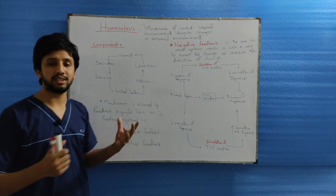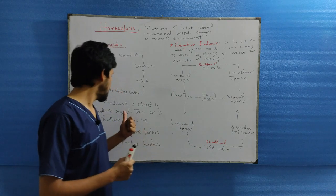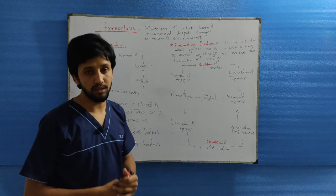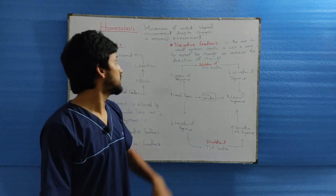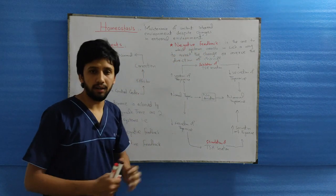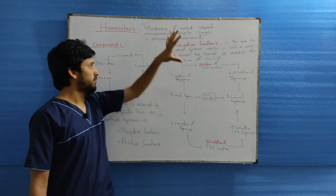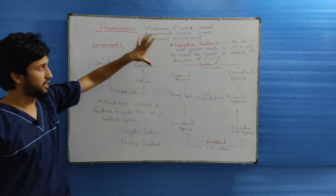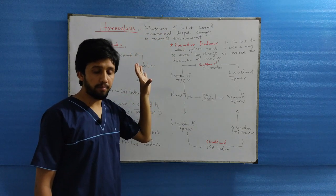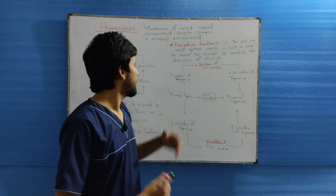This maintenance is achieved by feedback signals. What are the two basic signals involved? That is, negative feedback signals and positive feedback signals. We will now discuss the negative feedback mechanism, which is very common and occurs in many processes in our body.